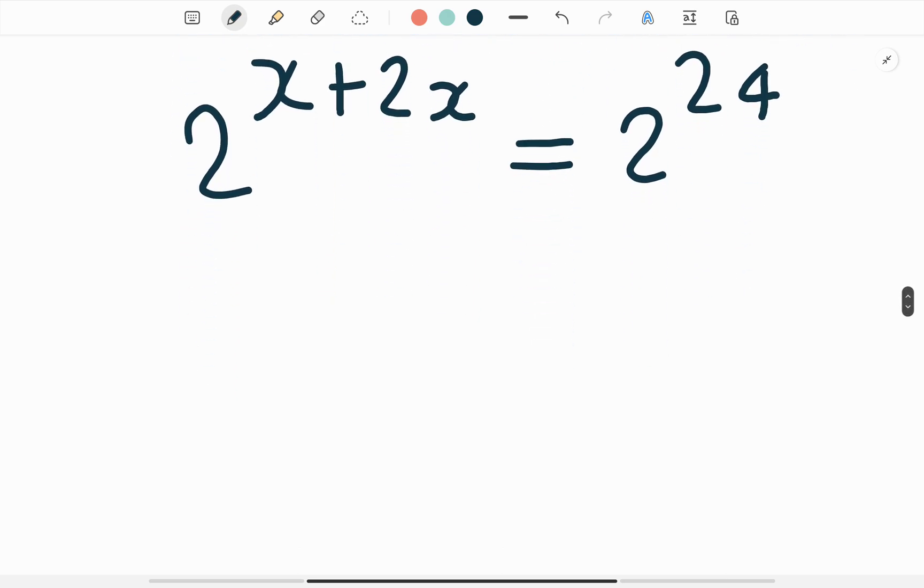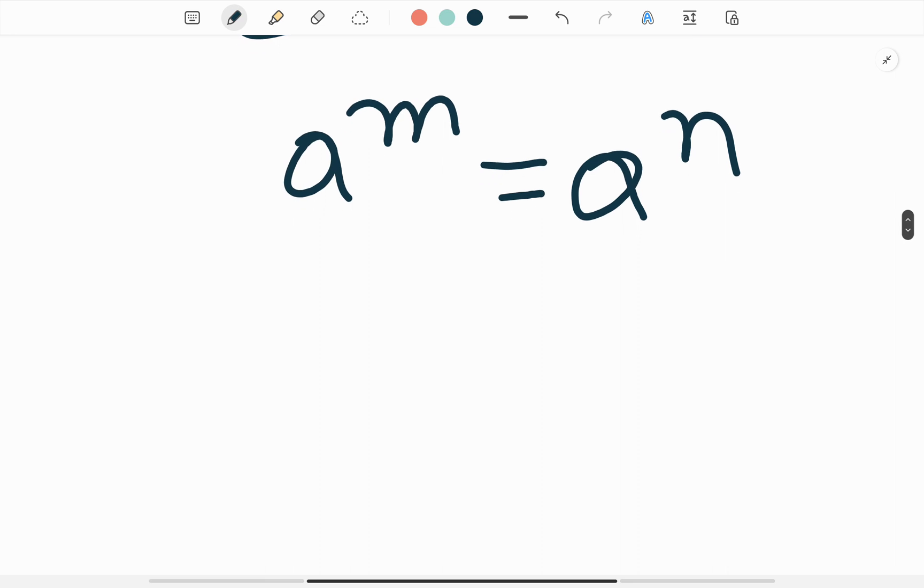Now we know, first we write as a to the power m is equal to a to the power n, then m is equal to n.